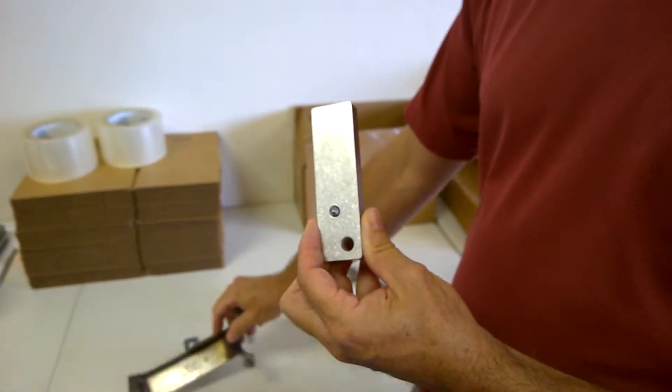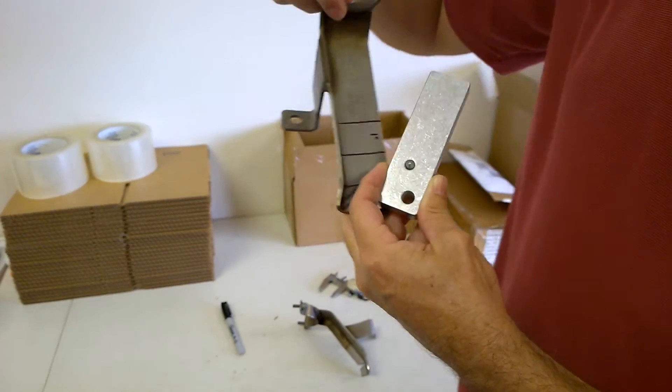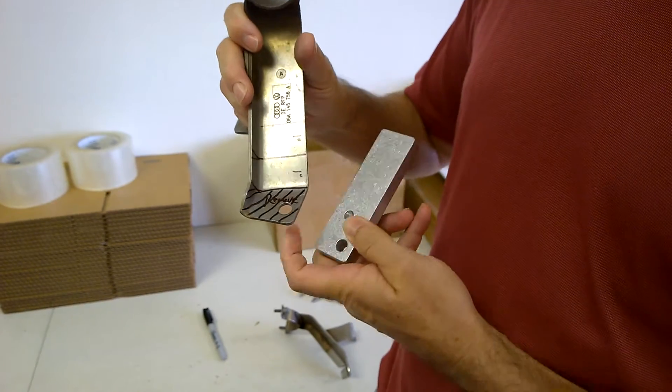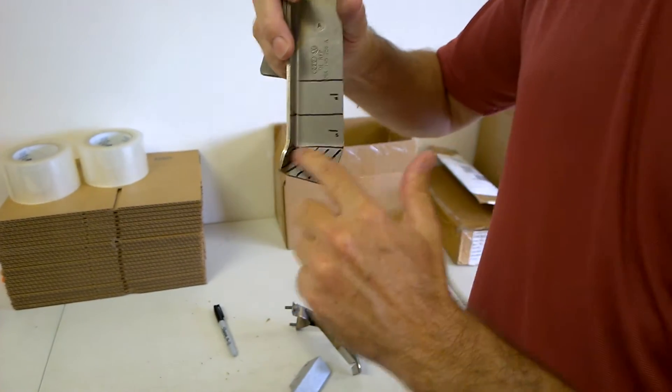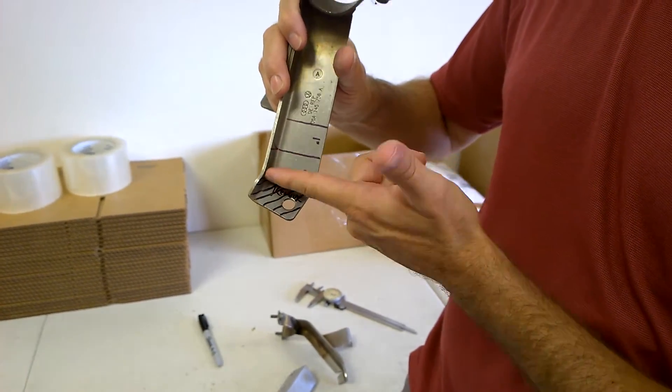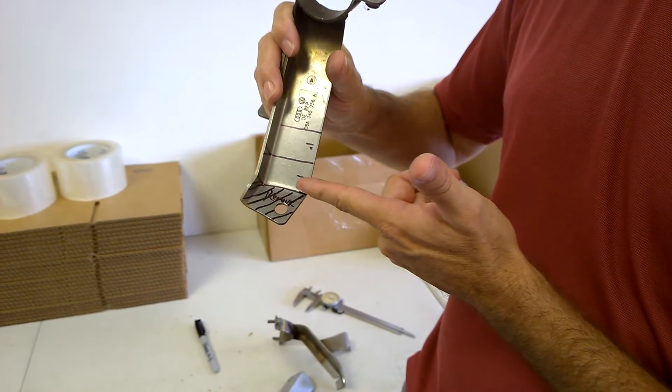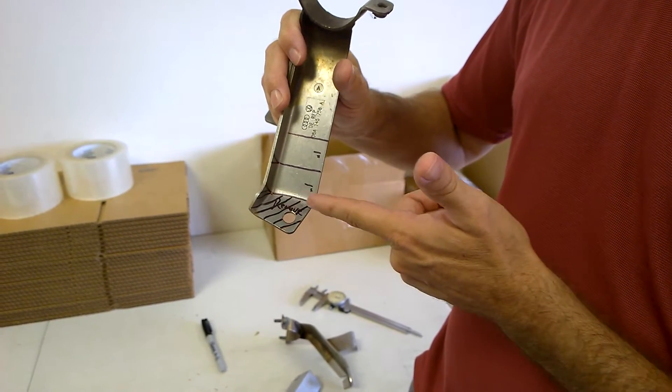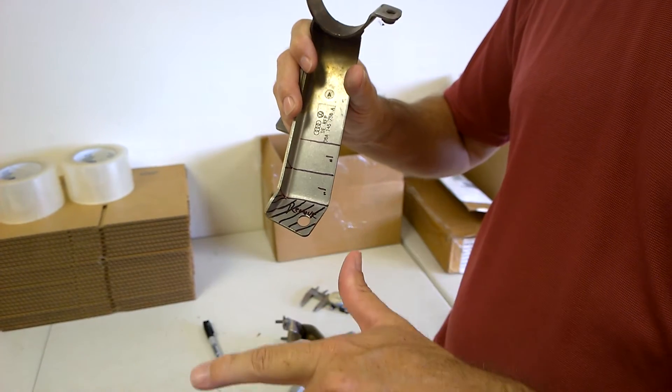So what you're going to do is you're going to take the original bracket and you're going to cut the bottom. There's a bend right here and you're going to, with a hacksaw, just put it in a vise and cut the bottom of this bracket off to where this bend is gone.